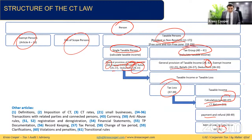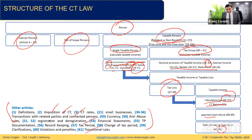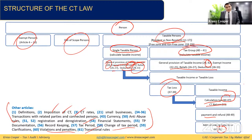Other provisions not specifically covered in the structure include definitions, record-keeping provisions, change of tax period, violations, penalties, and transitional rules — all part of the total 70 provisions of the law.